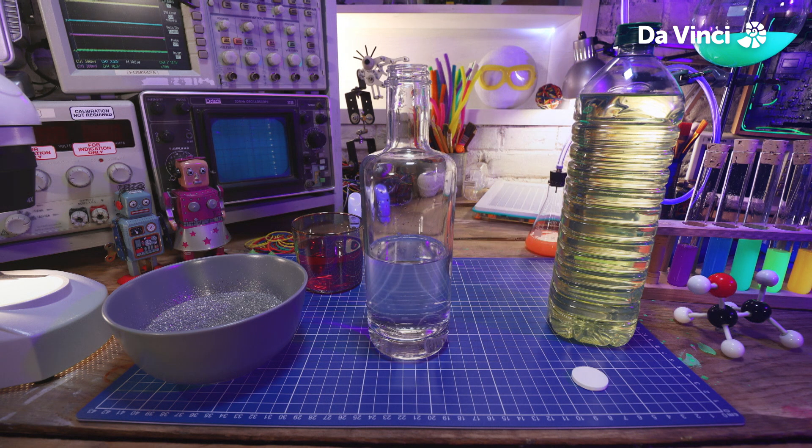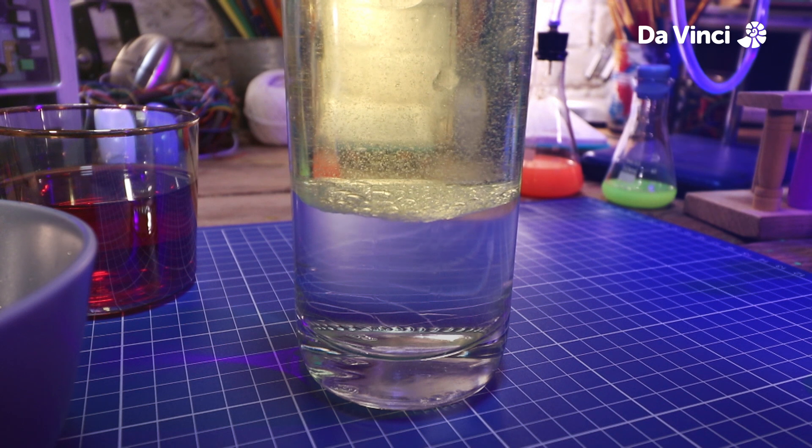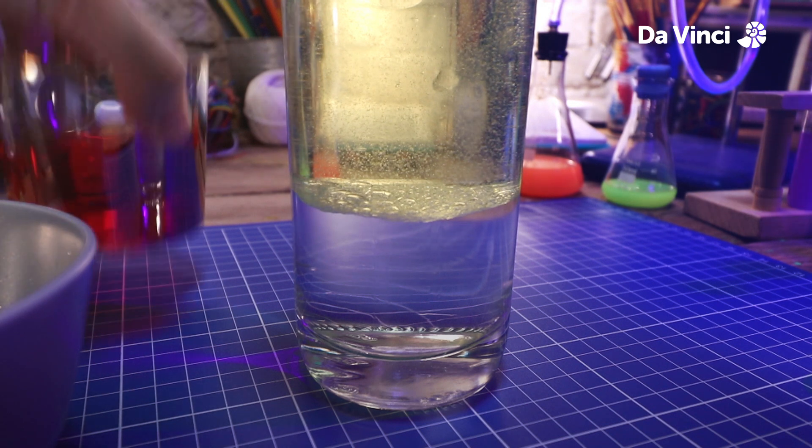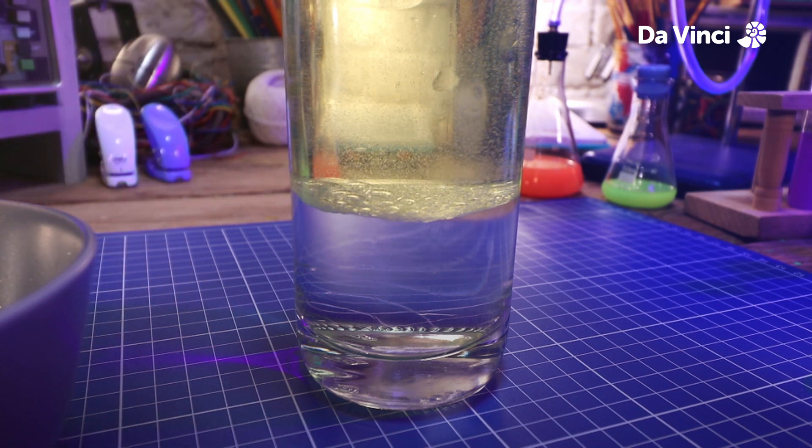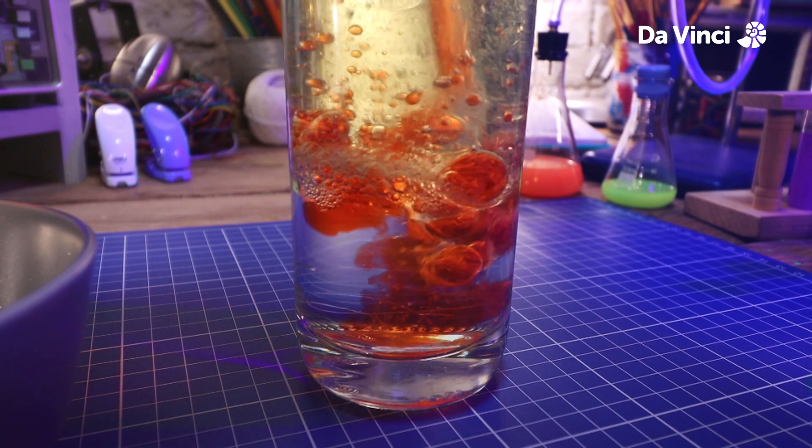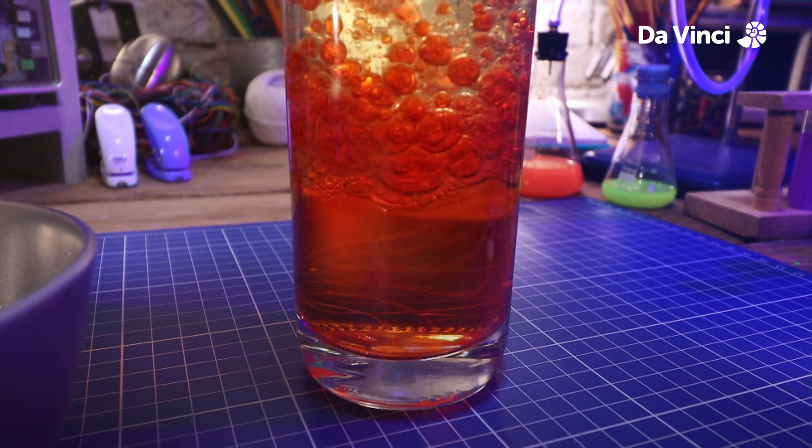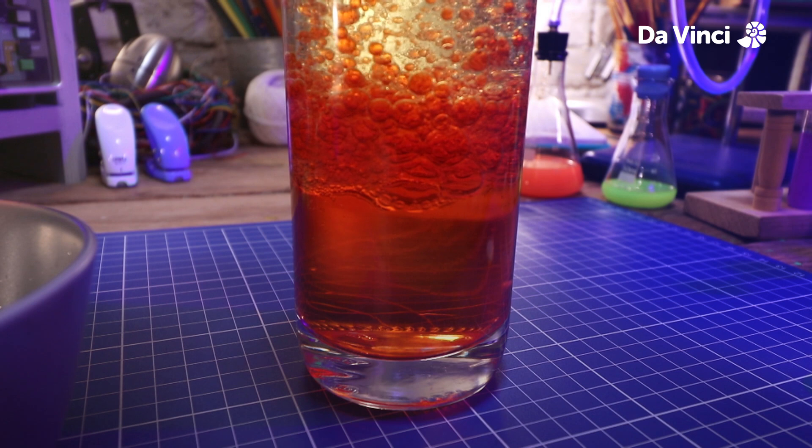Regular water first, followed by the less dense oil, which will be separate and on top. Next, I'm going to show you what happens when we add the colored water. It travels through the oil all the way down and mixes with the water at the bottom. How good is that?